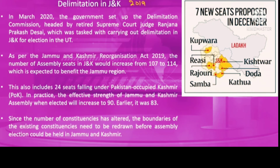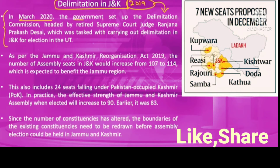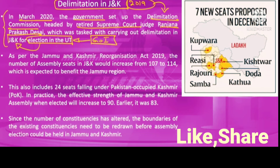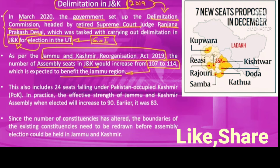Post-2019, considering the revocation of special status and the reorganization of J&K into two union territories, a new delimitation exercise became necessary. Accordingly, in March 2020, the government of India set up a delimitation commission specifically for Jammu and Kashmir, headed by retired Supreme Court Judge Ranjana Prakash Desai. The government stated this was essential to set the stage for elections and restore the political and democratic process in J&K. Under the J&K Reorganization Act of 2019, assembly seats were increased from 107 to 114 with a specific provision for more seats in the Jammu region.